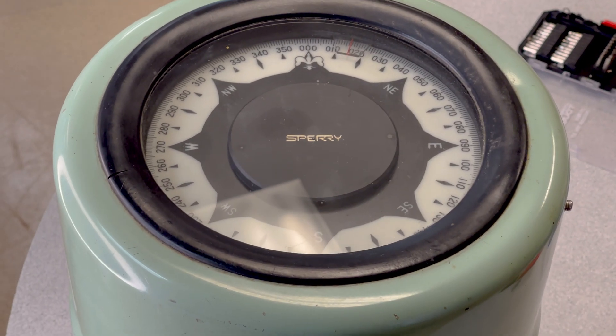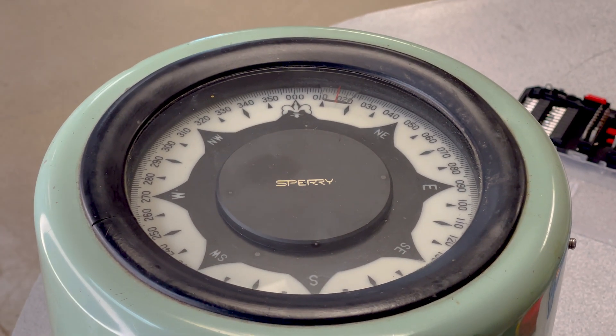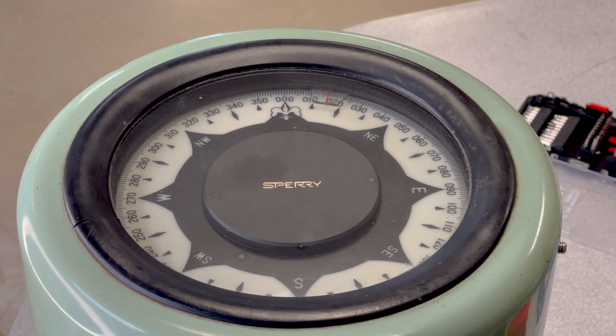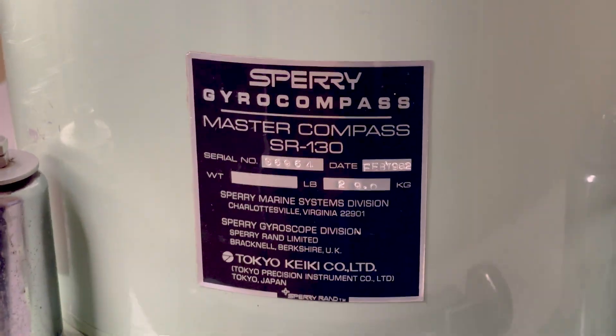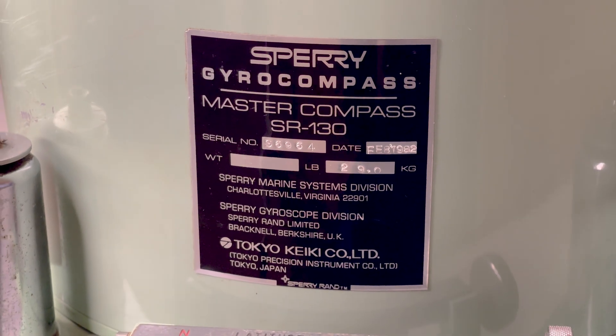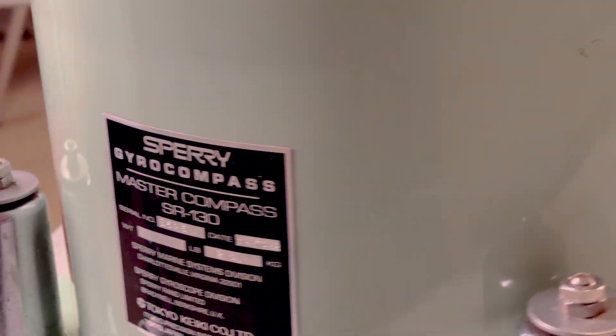This model is a Sperry SR-130. It was built in 1982 by Tokyo Kiki Corporation in Japan. This is one of the simpler models and was used on smaller boats such as tugs and ferries.